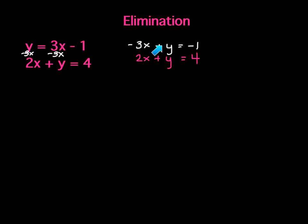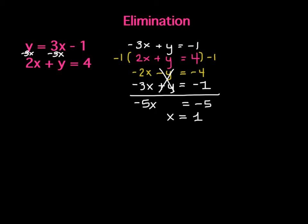I look at this, positive 1y, negative 3, positive 2. If I add these together, neither of them eliminate. But if I were to multiply this whole bottom row by a negative 1, this bottom row would become negative 2x minus y equals negative 4. The y's now eliminate. If I add the rows together, I get negative 5x equals negative 5, divide by negative 5, x equals 1. I can now take this 1 and substitute into here. I get 3 times 1 minus 1 is going to give me 2. The exact answer I'm supposed to get.